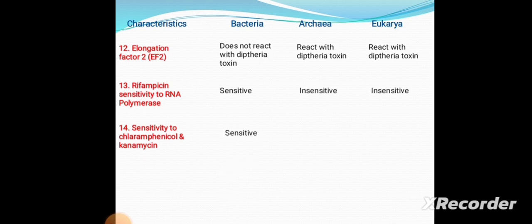Fourteenth is sensitivity to chloramphenicol and kanamycin. In Bacteria, they are sensitive to chloramphenicol and kanamycin. In Archaea, they are insensitive, and in Eukaryotes they are also insensitive to chloramphenicol and kanamycin.